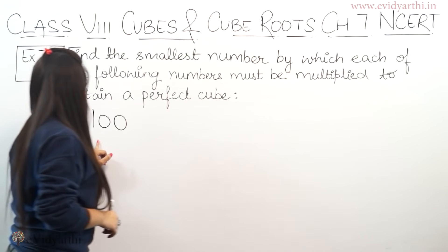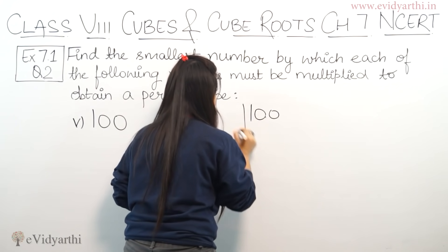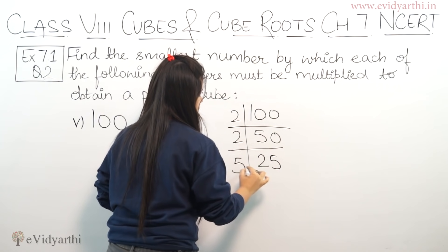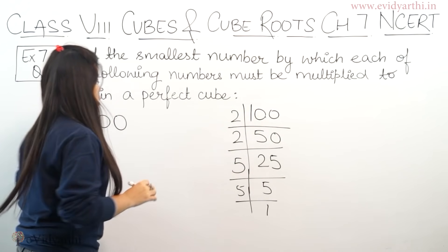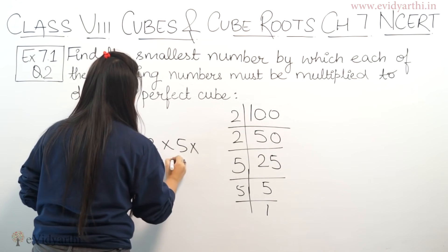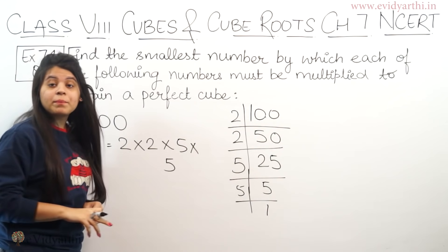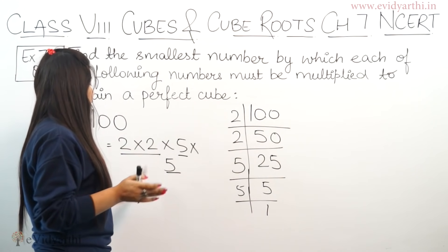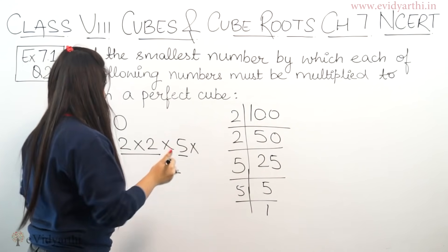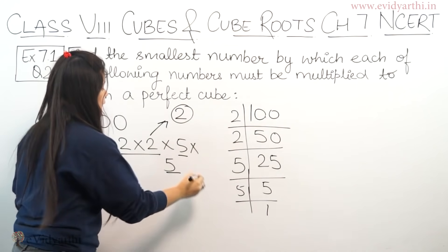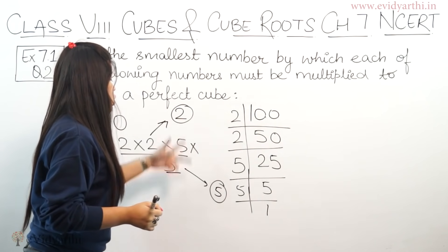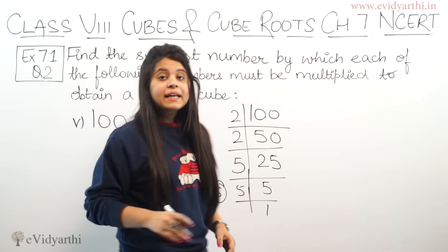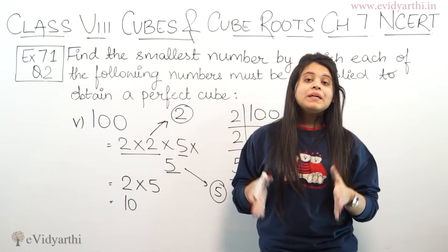Now coming to the 5th part. The number is 100. Let's prime factorize this. We can start with 2. Dividing gives 50, again by 2 gives 25. Now dividing by 5 gives 5, and 5 gives 1. So we can write it as 2 × 2 × 5 × 5. Now if we look for triplets here, not even one triplet is formed. Both 2 and 5 appear only twice. To make it a perfect cube, we need to form triplets. One 2 must be multiplied to complete the triplet of 2s, and one 5 must be multiplied to complete the triplet of 5s. So the number must have both 2 and 5, meaning 5 × 2 = 10. If we multiply this number by 10, the result will be a perfect cube.